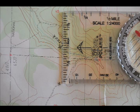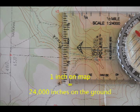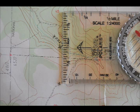Let's look at an example. The distance from here to here on the map is 1 inch. This map has a scale of 1 to 24,000. That means the actual ground distance is 24,000 inches.